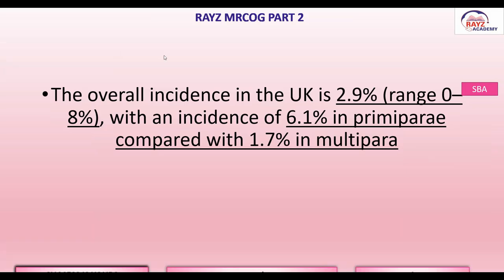Talking about the overall incidence of perineal tears, obstetric anal sphincter injuries in the UK ranges from 0 to 8%, with the average being 2.9%. The incidence is higher in primigravida at 6.1%, as compared to multipara at 1.7%. These are some very important numbers you should be aware of, with the overall incidence being 2.9%.